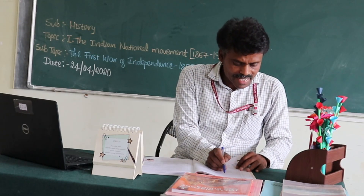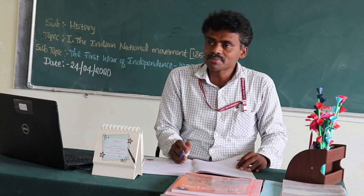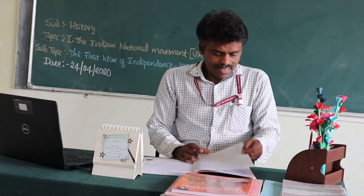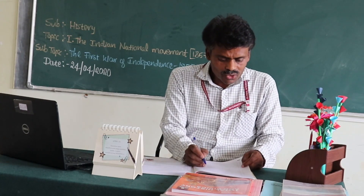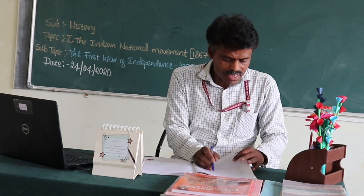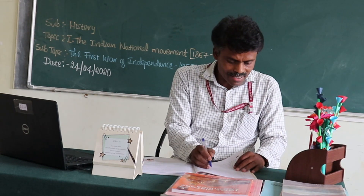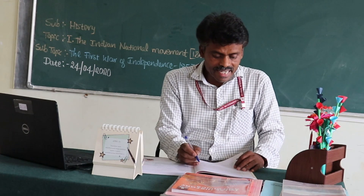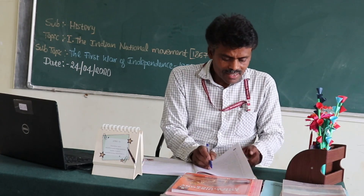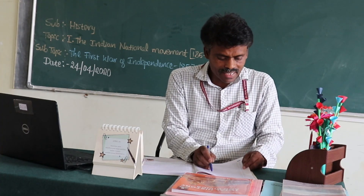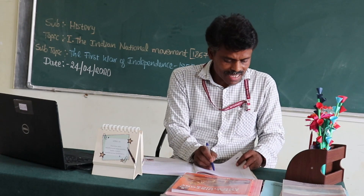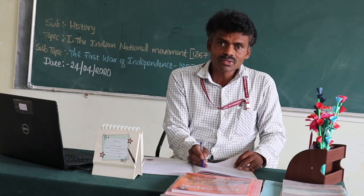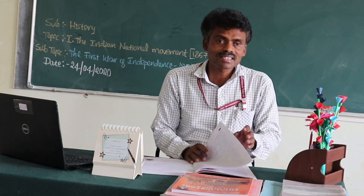The sixth question: Name two Indian states brought under British control using the Subsidiary Alliance. No need to write full paragraphs — just two words each. First state: Hyderabad in 1798. Second state: Awadh — spelled A-W-A-D-H — in 1801. That is the answer for the sixth question.